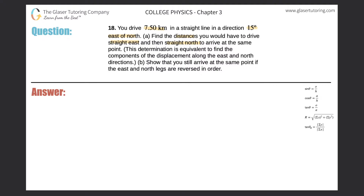First, let's draw a coordinate system with a y-axis and an x-axis. Beginning at the origin, let's draw the vector they're describing. It says you drive 7.5 kilometers in a direction 15 degrees east of north, so here's north and here's east.